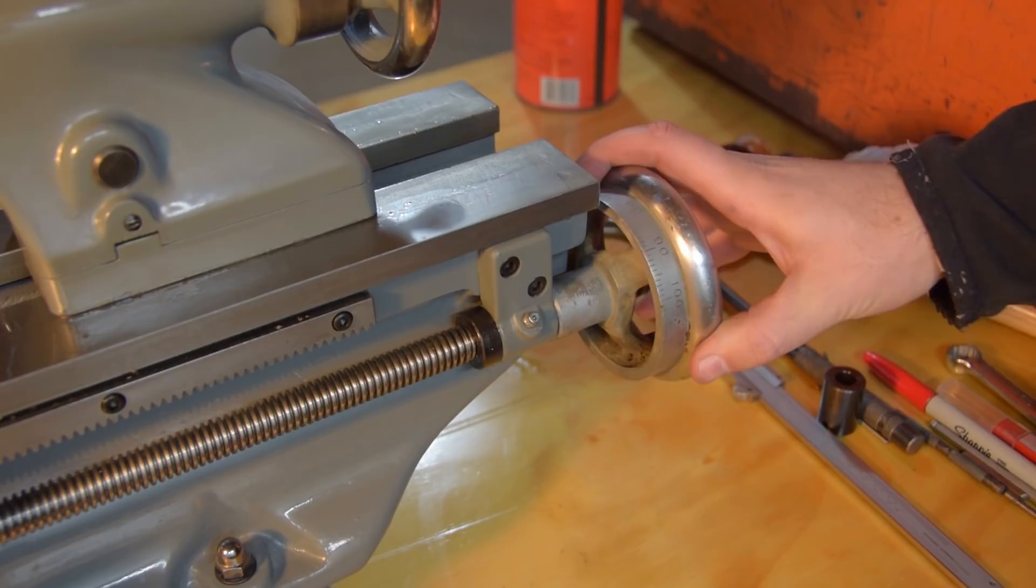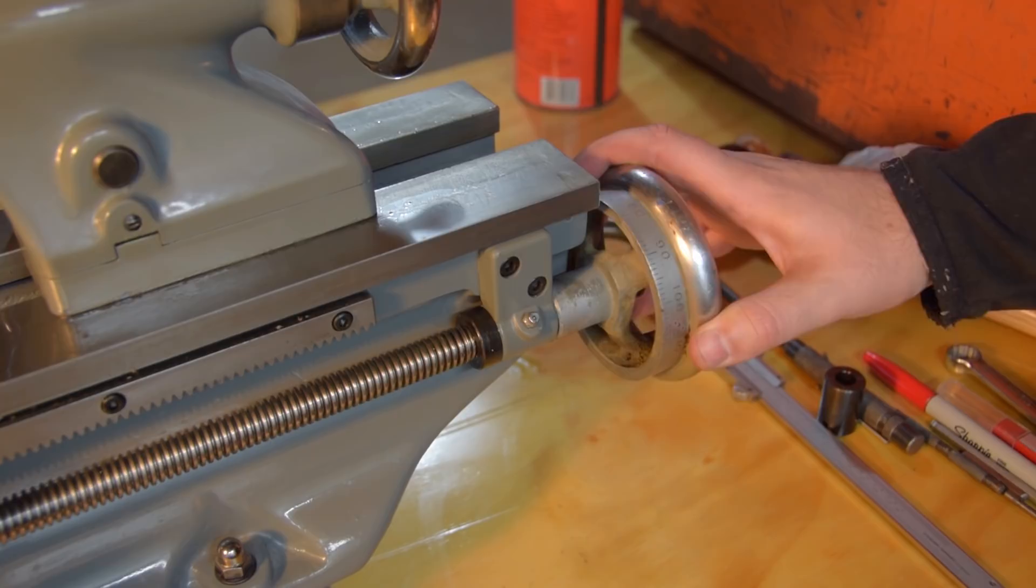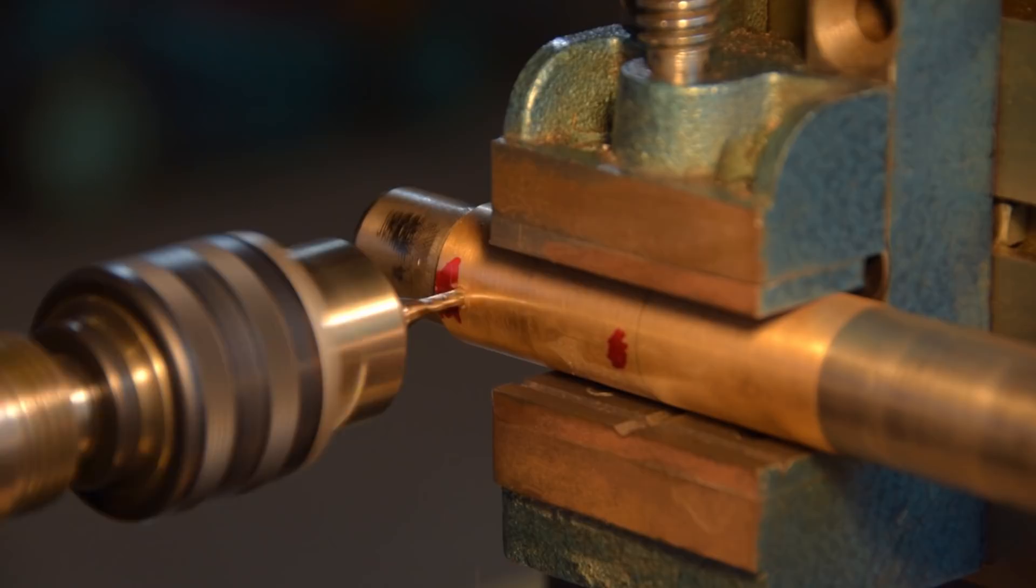For the depth, I have a graduated hand wheel on the lead screw and the carriage half nuts engaged. If I had a second dial indicator, I'd have used that for the depth as well, but the hand wheel should be accurate enough in this case.